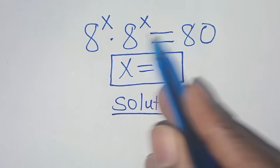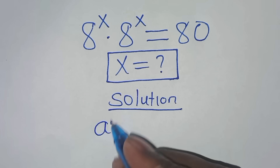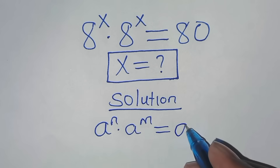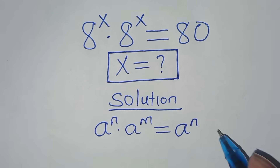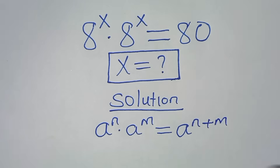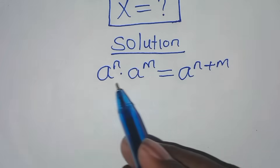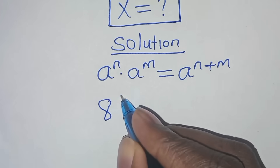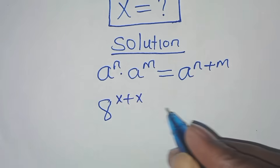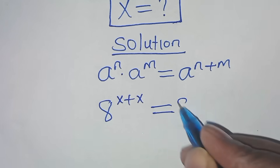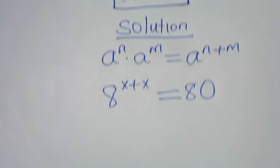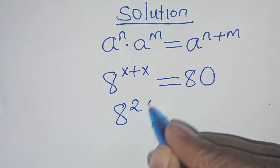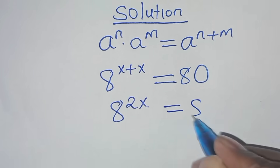This exponential equation is in the form of 8 to the power n times 8 to the power m, which we can express as 8 to the power n plus m. Applying this exponential property, we have 8 to the power x plus x, which is 8 to the power 2x. This is equal to 80.